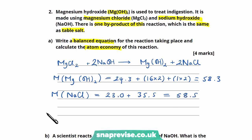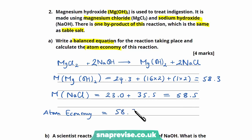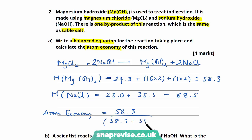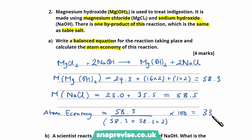Now we can calculate the atom economy. Our intended product is magnesium hydroxide, so that's 58.3 on top, divided by all the products: magnesium hydroxide (58.3) plus two lots of sodium chloride (58.5 times 2), multiplied by 100, giving us 33.3% atom economy.